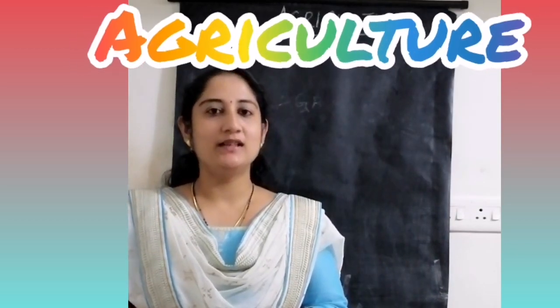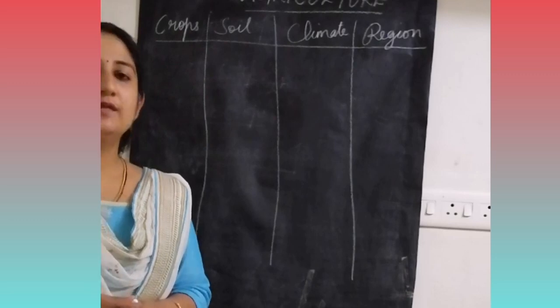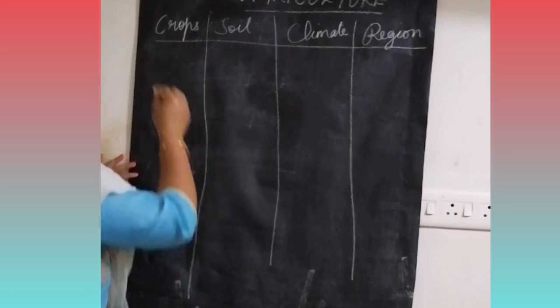Hi children, welcome back to our geography class. Today we will be continuing the second part of the agriculture lesson. In the first part we saw what are the different economic activities and the different cultivation techniques or methods. In this part, we see about the first fiber crop, which is called cotton.